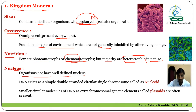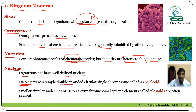In prokaryotic cells, the nuclear membrane, nuclear envelope, nucleolus, and nucleoplasm are not well-defined. Therefore it is called a prokaryotic nucleus. The genetic material present in the nucleus exists in the form of DNA. The nature of the DNA is simple, double-stranded, circular, and forms a single chromosome.